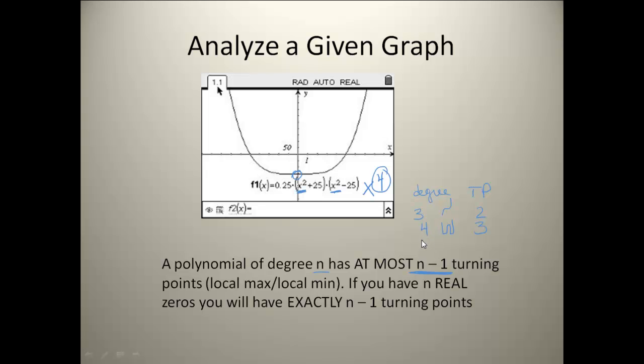Now this last one is also a fourth degree, but it only has one turning point. Notice here it says that it would have at most n minus one. So at most it's going to have one less than its degree. And if you have the same number of real zeros as your degree, then you're going to have exactly n minus one. So these first two, their zeros were all real zeros. So the third degree polynomial had three real zeros. The first fourth degree polynomial had four real zeros. This last fourth degree polynomial only has two real zeros, one and two. The other two are imaginary and that's why the turning points are going to be less.